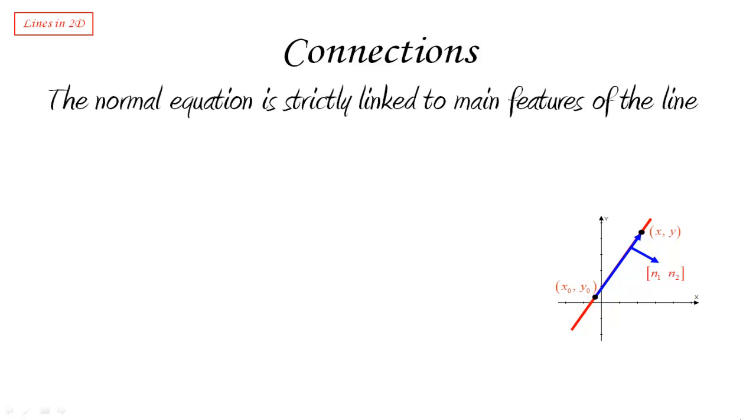So first of all, let's have a look at this. If we start from the normal equation again, it looks in that form: generic vector times the normal is equal to the specific point vector times the same normal.